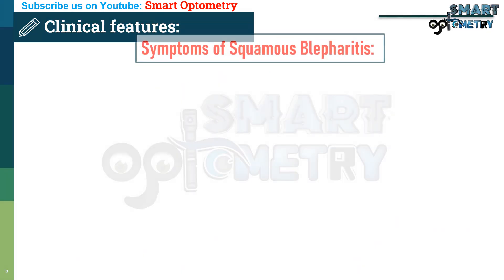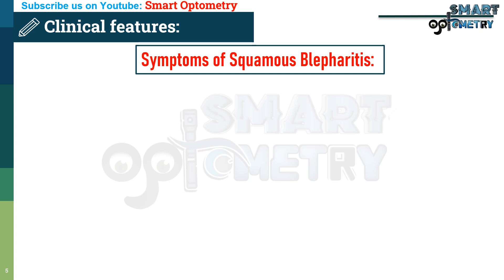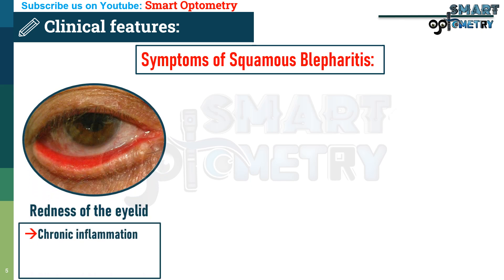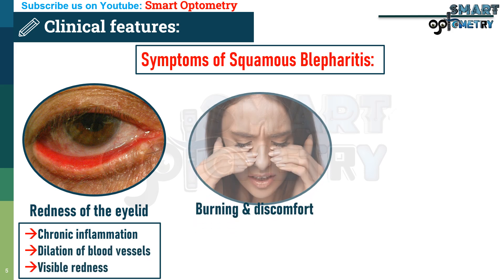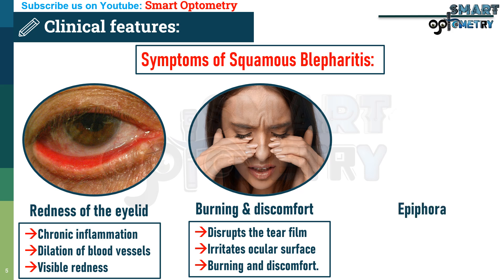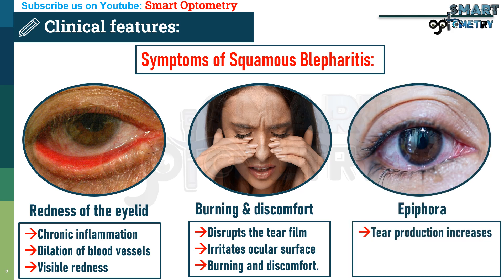Clinical features of squamous blepharitis. Symptoms include redness of the eyelid margins — chronic inflammation causes dilation of blood vessels, leading to visible redness along the eyelid edges. Burning and discomfort occur as inflammation disrupts the tear film and irritates the ocular surface. Epiphora: tear production increases as a response to eye irritation, leading to excessive tearing.